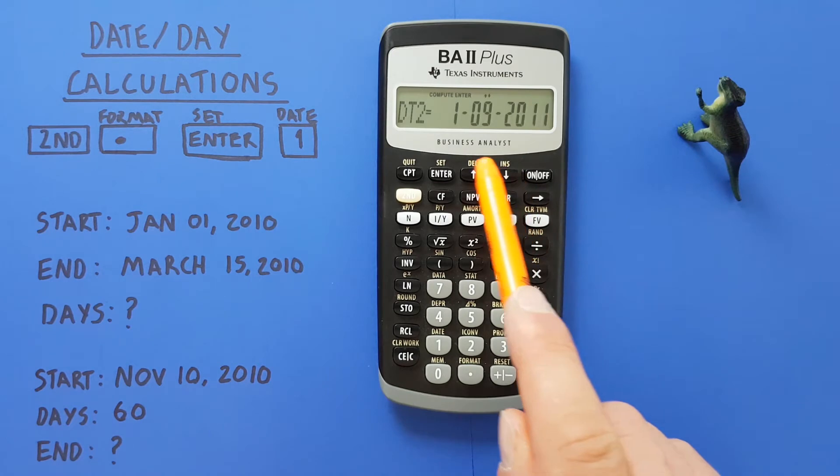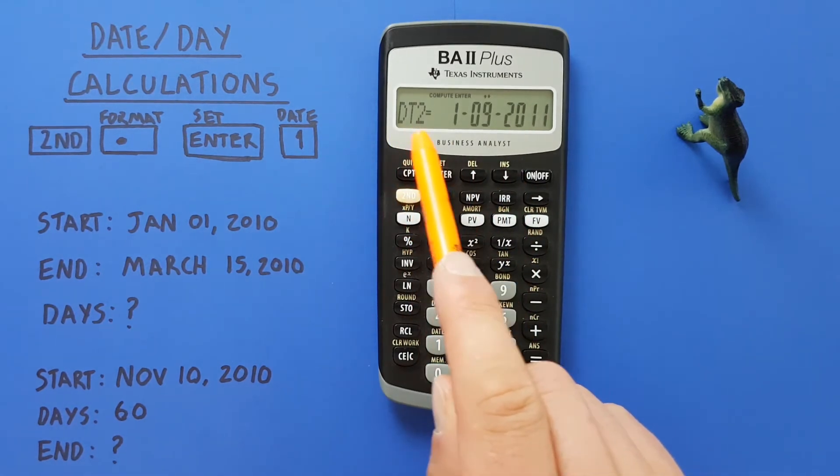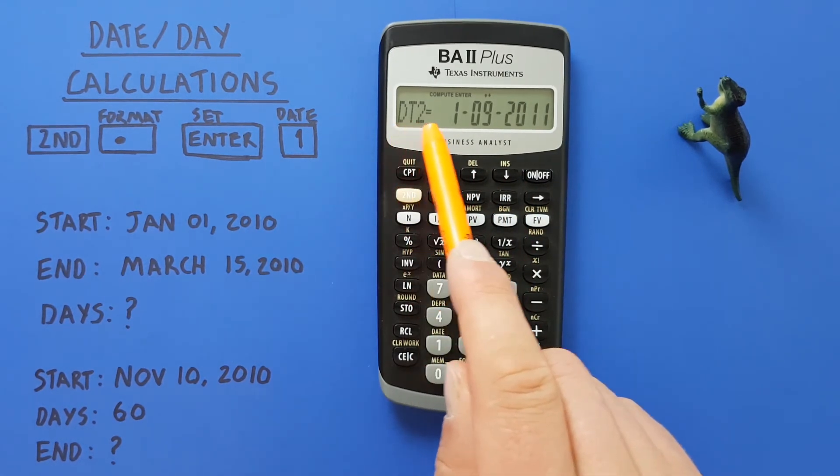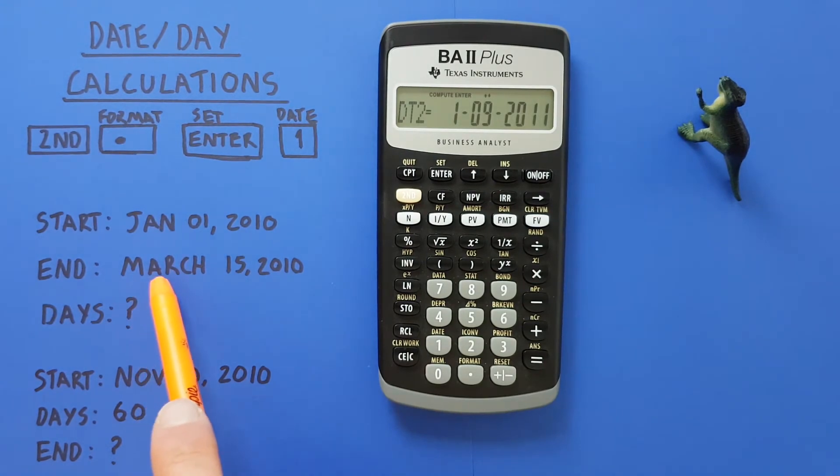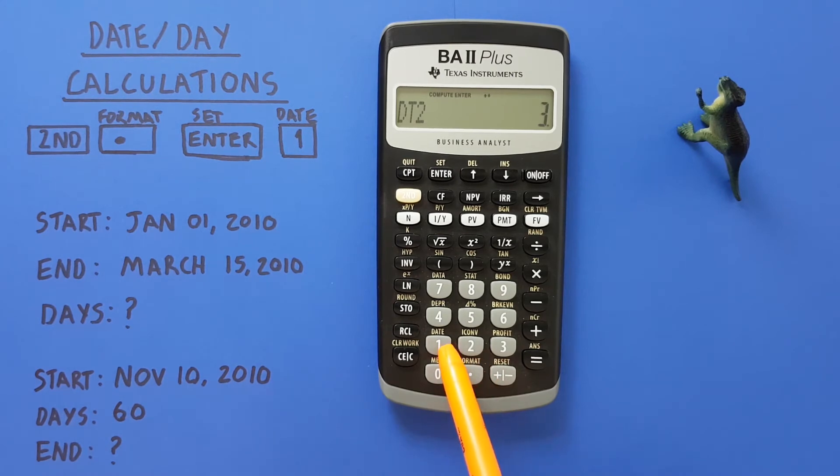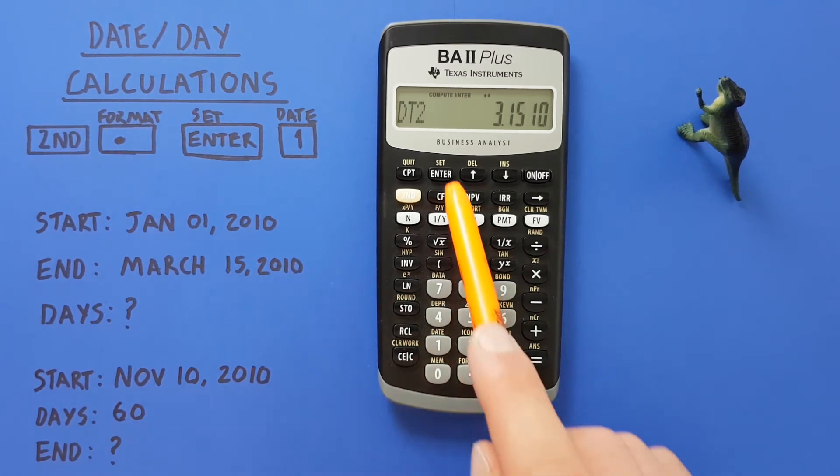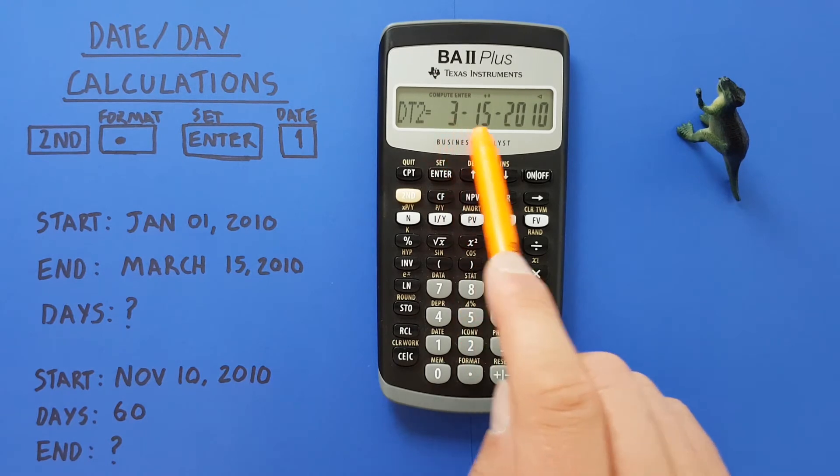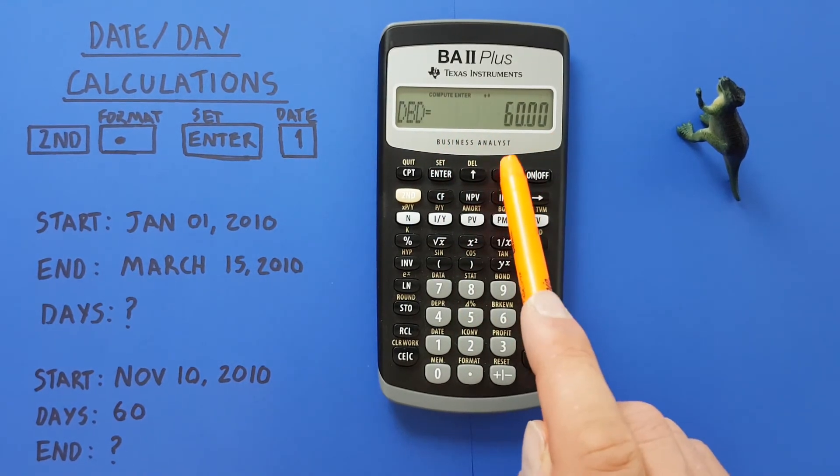If we then scroll down we get to DT2 or date 2, or our end date, which for us was March 15th, 2010. So we start with the month. Since March is the third month, we go 3, decimal, then the day 15, and then the year again 2010, so just enter 10 and press enter.